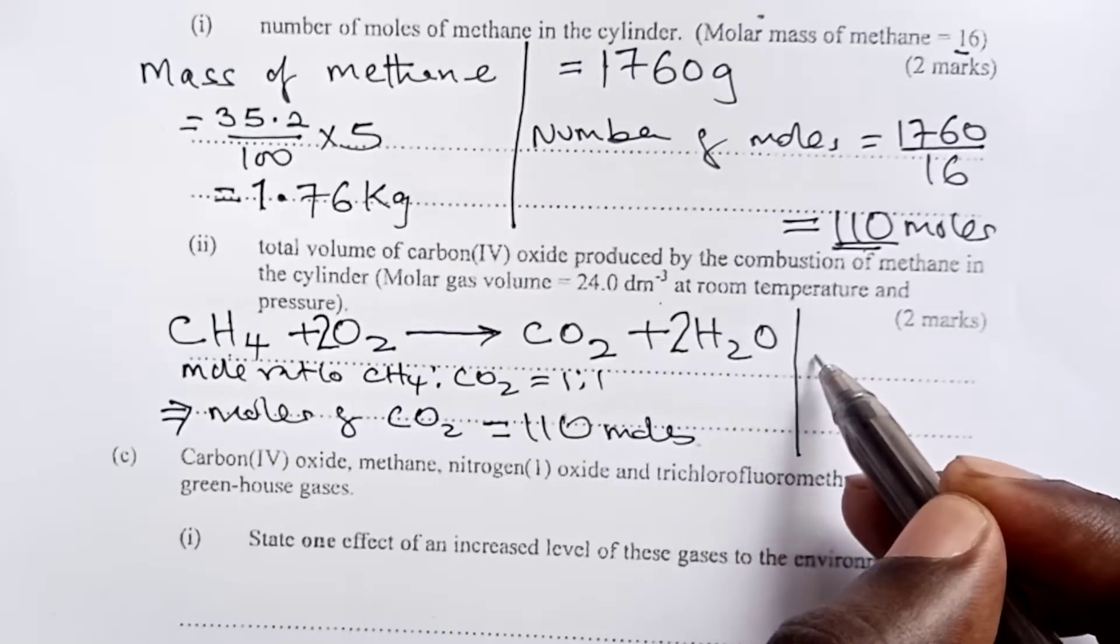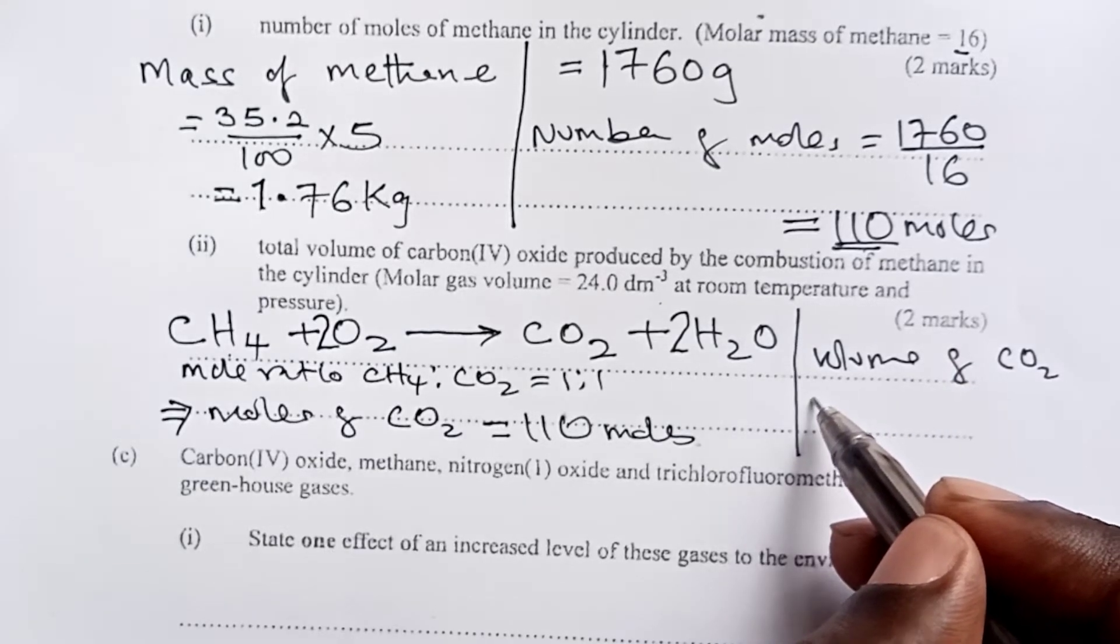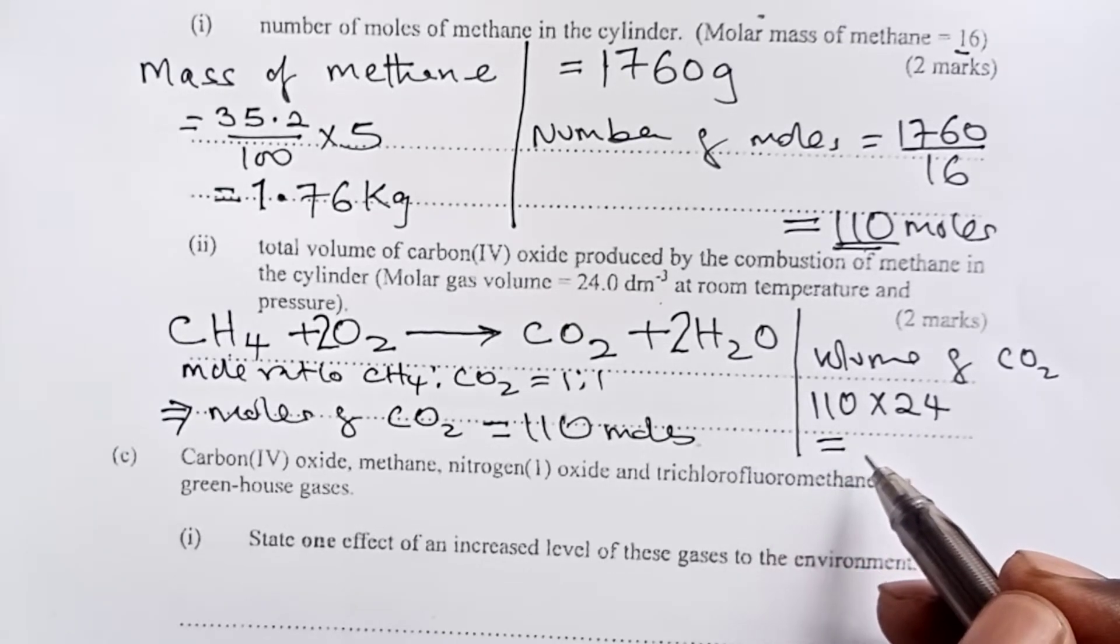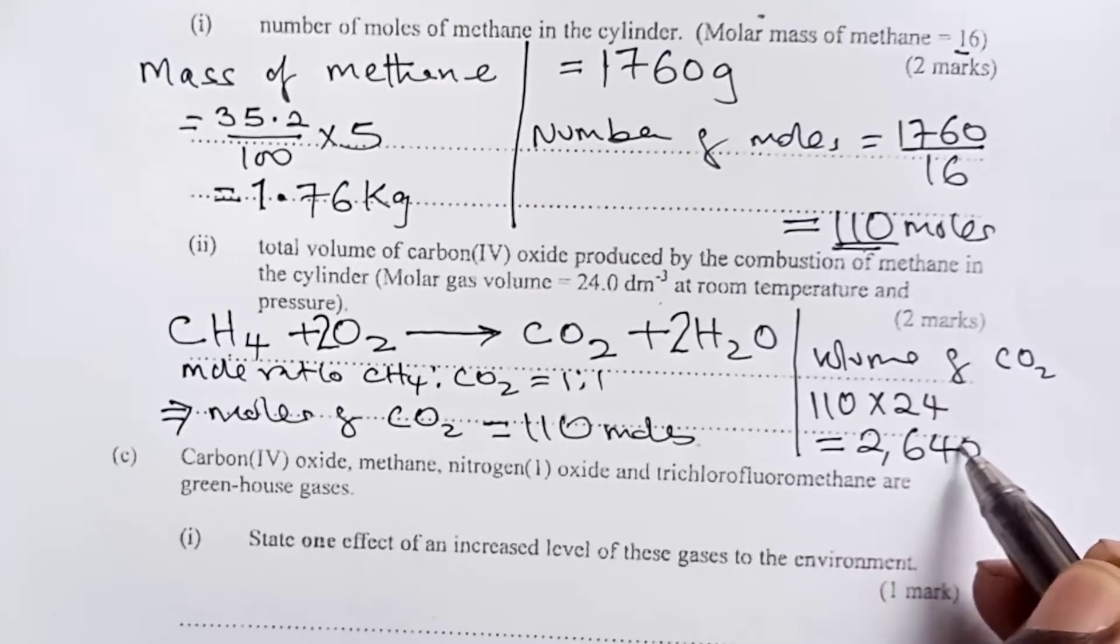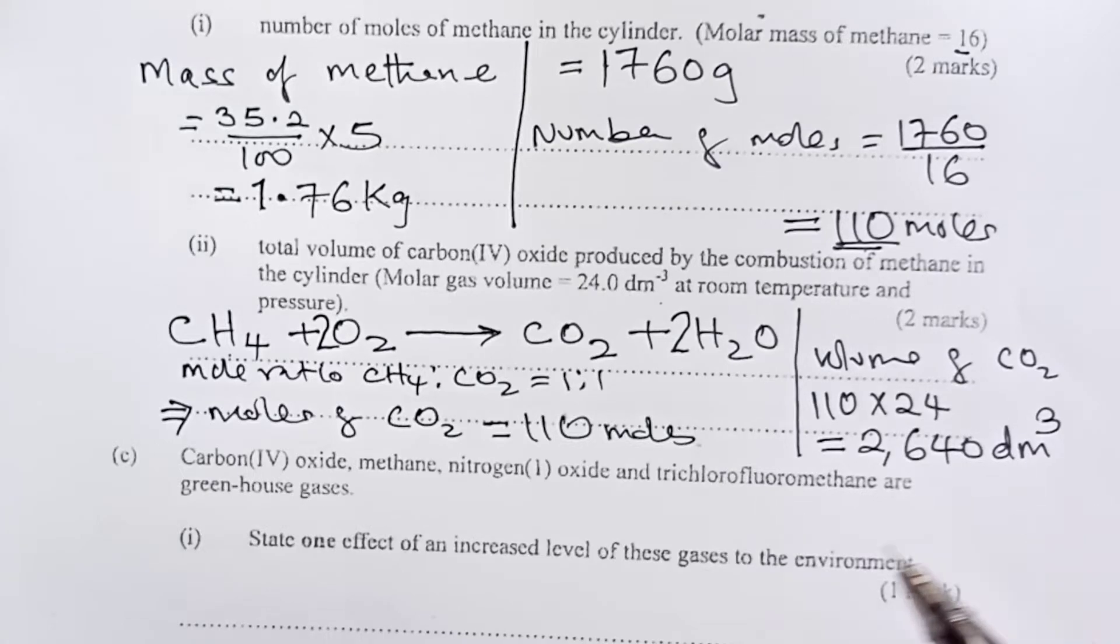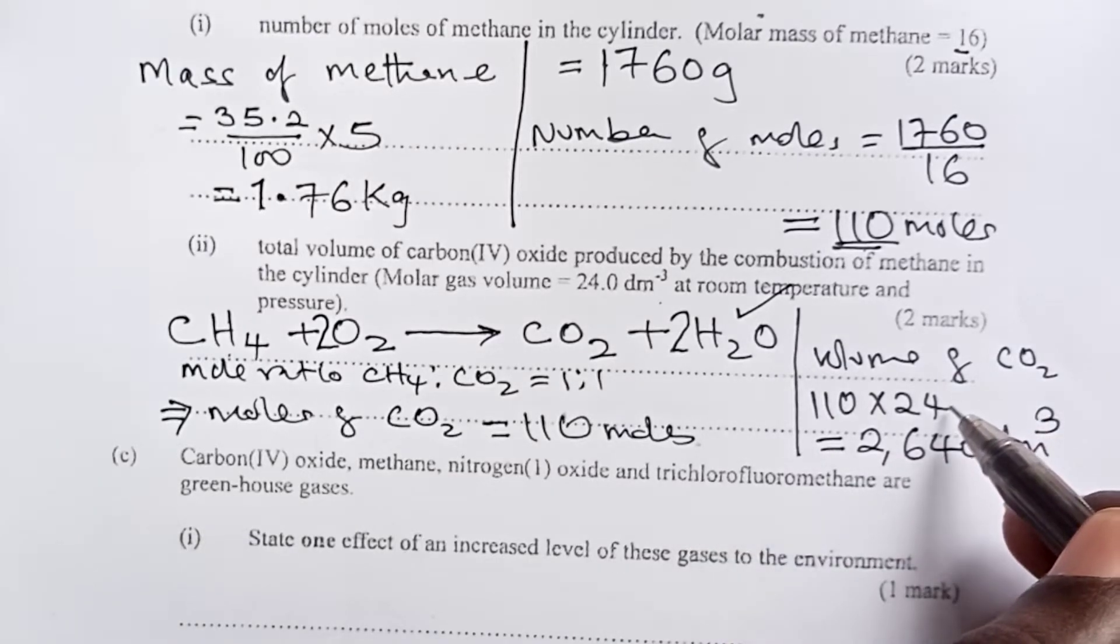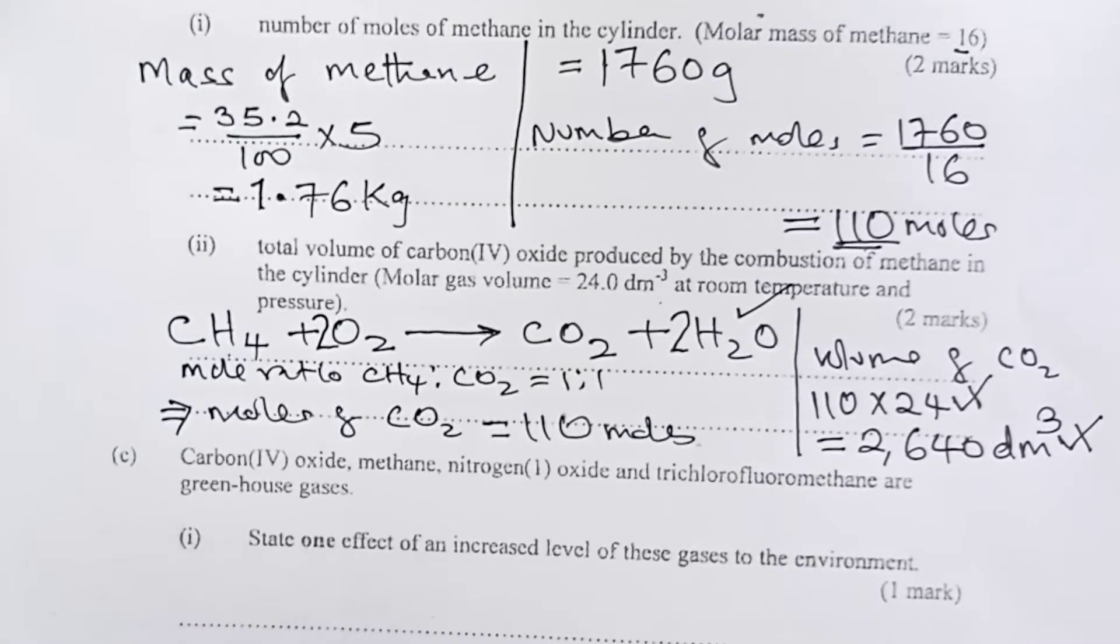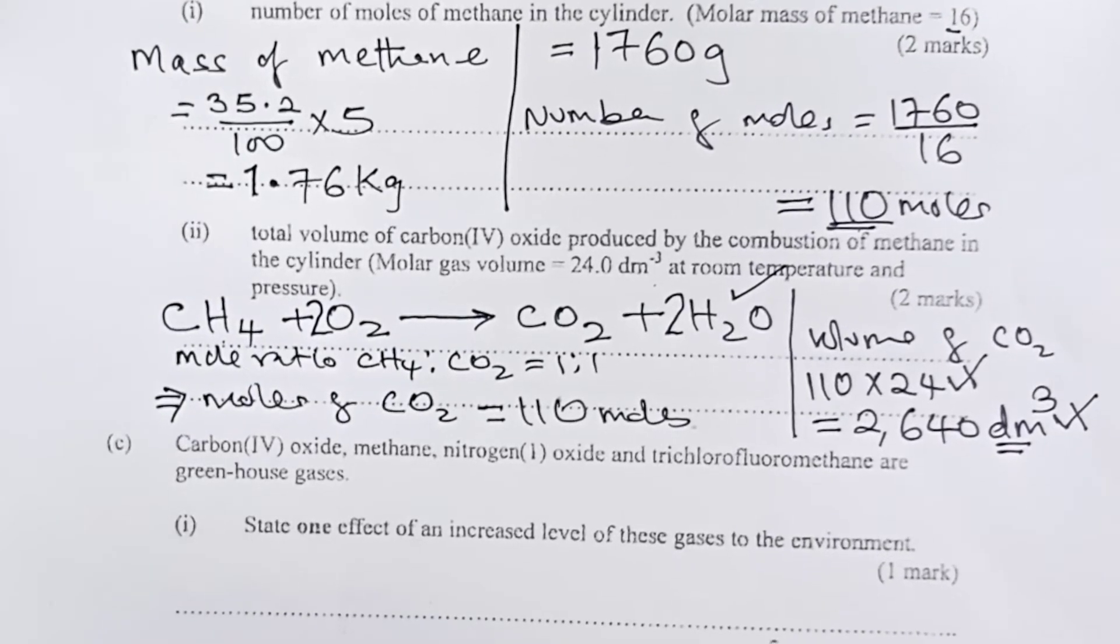So to get volume, to get volume of carbon-4 oxide, we shall simply multiply the number of moles by the molar gas volume at RTP. So in terms of marking, the equation gives one whole mark, multiplying the number of moles by 24, half a mark, and the answer, another half a mark. Remember, the unit had to be present. Otherwise, the half a mark for the answer would be lost.